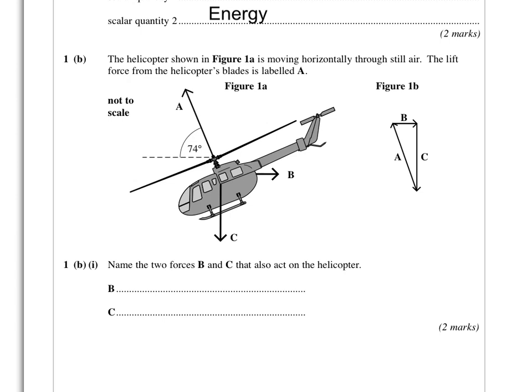Moving on to part B, the question with a helicopter. The helicopter shown in figure A is moving horizontally through still air. The lift force from the helicopter's blades is labelled A. Name the two forces, B and C, that also act on the helicopter. We can see that our lift force isn't actually vertical - it's at an angle of 74 degrees to the horizontal. But it's asking us, what is C and what is B?